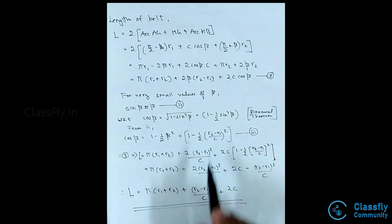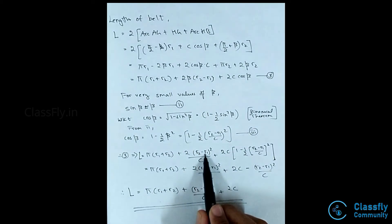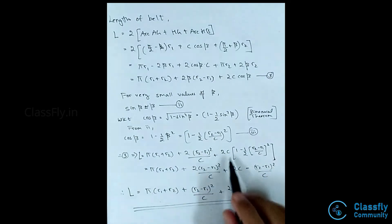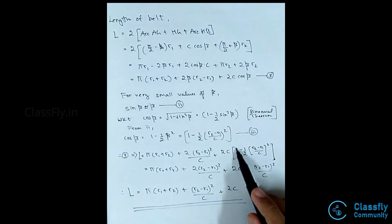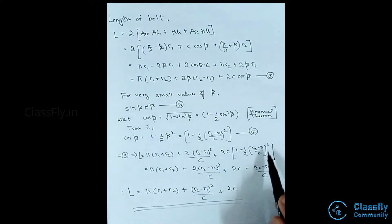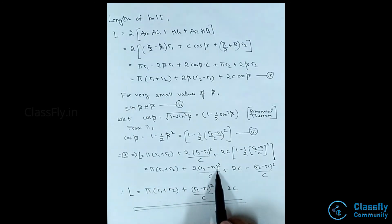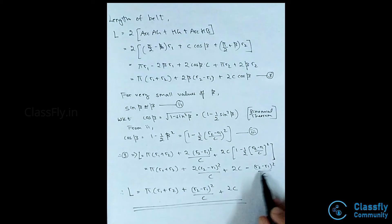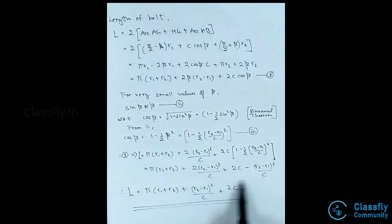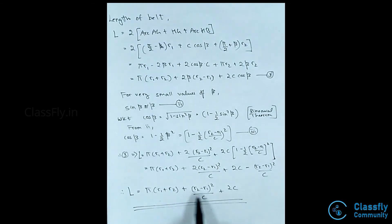Substituting into equation 3: L = pi(r1 + r2) + 2*((r2 - r1)/C)*(r2 - r1) + 2C*(1 - (1/2)*((r2 - r1)/C)²). On simplification, subtracting similar terms, the final value of L is given as: L = pi(r1 + r2) + (r2 - r1)² / C + 2C. This is the length of the belt in an open belt drive.